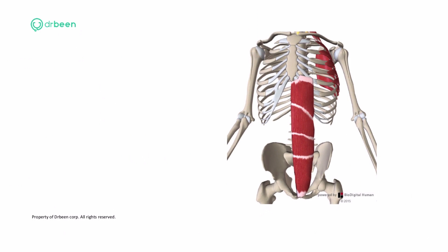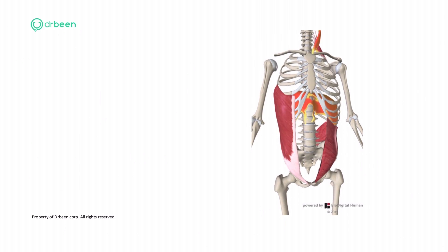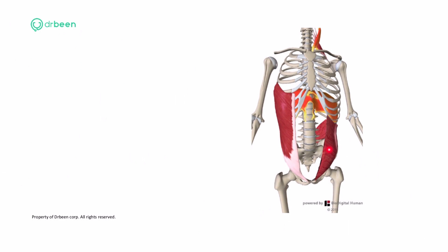Now let us see the muscles for forced expiration. This is the rectus abdominis — the six-pack muscle. Both rectus abdominis together are responsible for forced expiration. In the case of coughing, we may also have the obliques — this is the internal oblique, this is the external oblique — that would help as well.